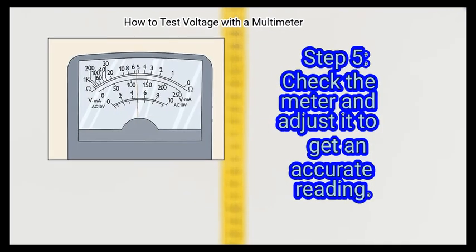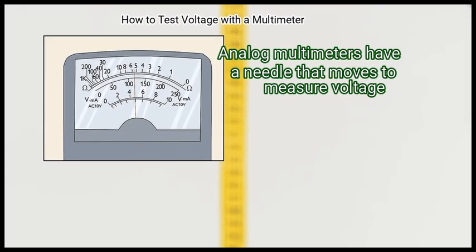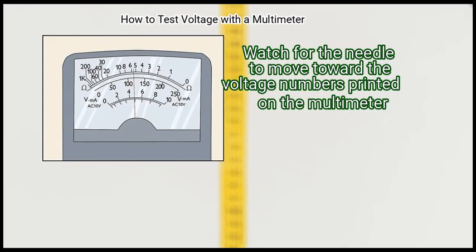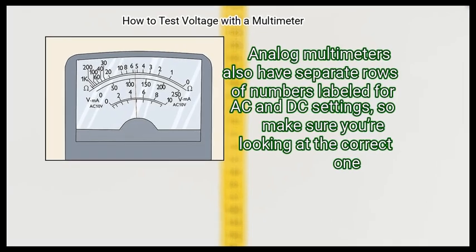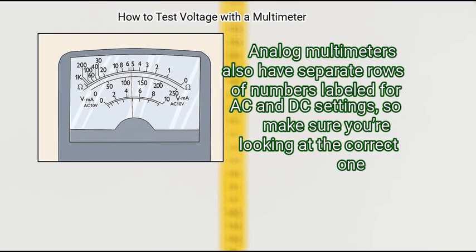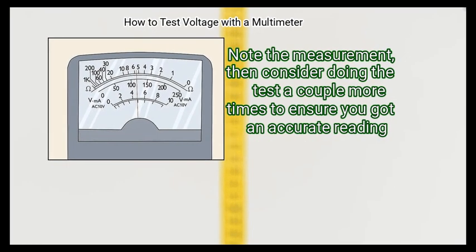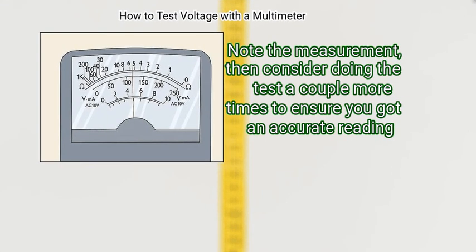Step 5: Check the meter and adjust it to get an accurate reading. Analog multimeters have a needle that moves to measure voltage. Watch for the needle to move toward the voltage numbers printed on the multimeter. Analog multimeters also have separate rows of numbers labeled for AC and DC settings, so make sure you are looking at the correct one. Note the measurement. Then consider doing the test a couple more times to ensure you got an accurate reading.